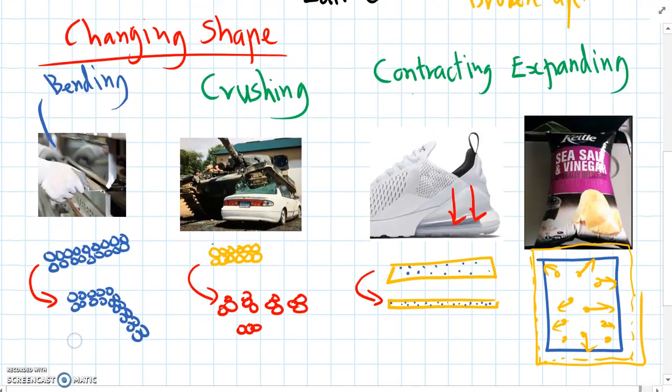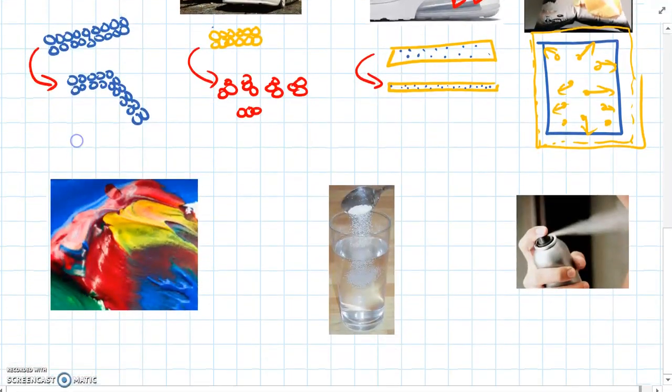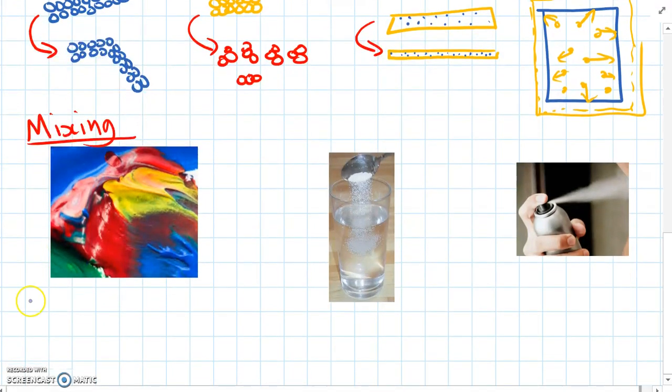So all of these types of physical change, they're changing the shape of the material, but they're not changing what it is, what it actually is. Some other examples are when we mix materials together. And a common one we've all done before is mixing paints.